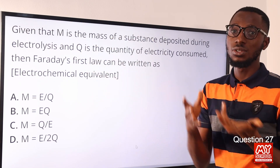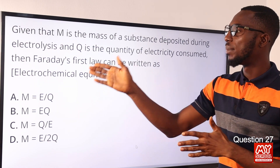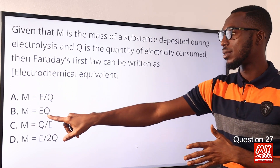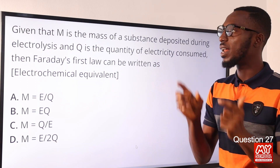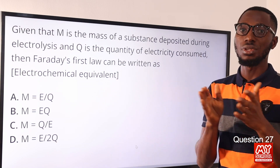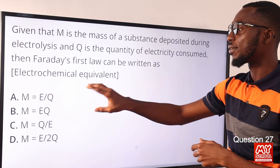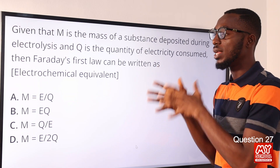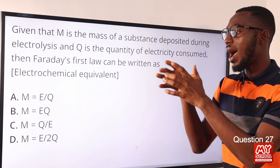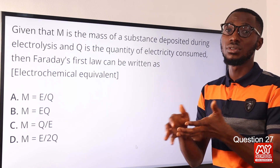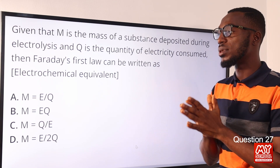M for mass, Q for quantity of electricity — we are talking about I times T. E here is the electrochemical equivalent of the substance. Since M is directly proportional to Q, that means M equals KQ. The K in this sense is E for electrochemical equivalent. So M equals EQ. If you want to break it down, M equals E times I times C, where Q equals I times C. So the correct option here is option B: M equals EQ.